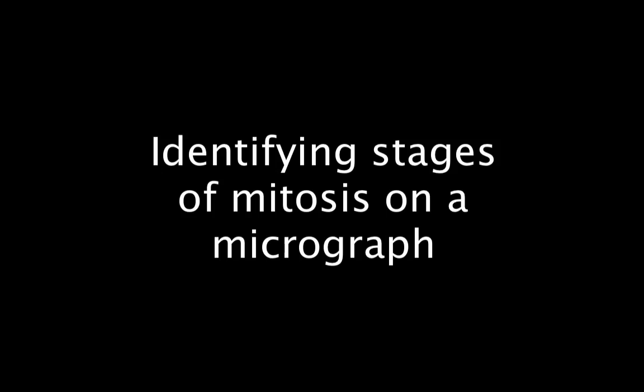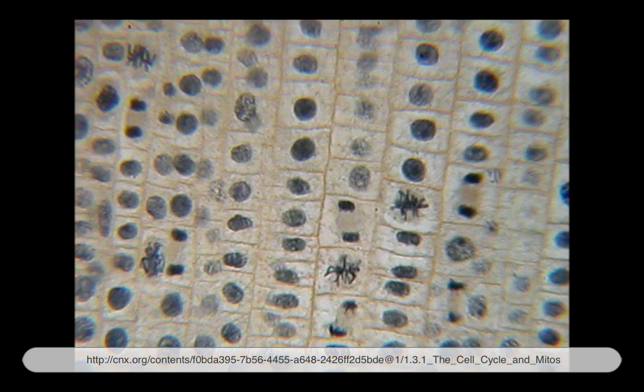Now let's take a look at the stages of mitosis as seen on a micrograph. In this micrograph, we can see some cells that are actively dividing and some that are not. So of those that are actively dividing, let's identify which stage of mitosis they are in.